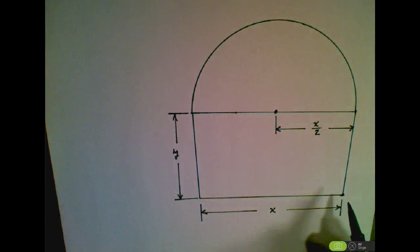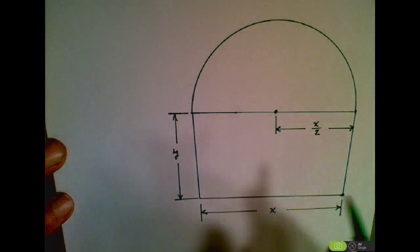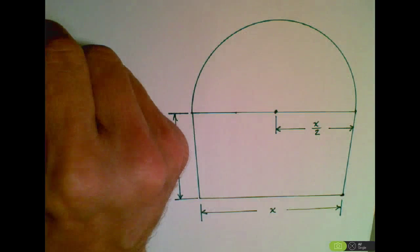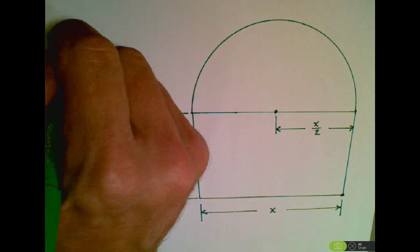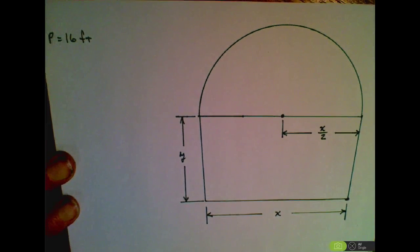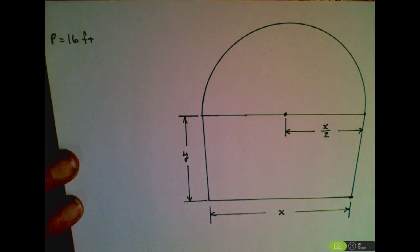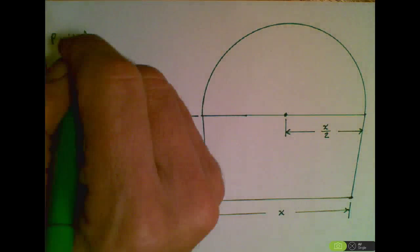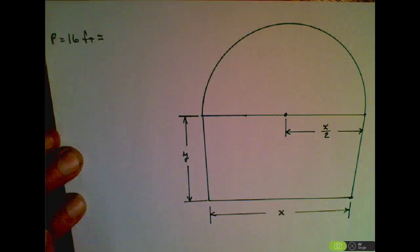Let's write a perimeter equation. We know the perimeter, which is equal to 16 feet, is made up of a number of segments.